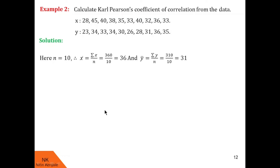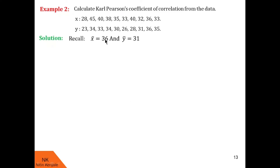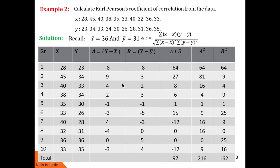For further calculations we use the calculation table with x bar equals 36 and y bar equals 31. For column A, x minus x bar: 28 minus 36 equals minus 8; 45 minus 36 equals 9; 40 minus 36 equals 4, and so on. For column B, y minus y bar: 23 minus 31 equals minus 8; 34 minus 31 equals 3; 33 minus 31 equals 2, and so on. For A into B: minus 8 into minus 8 equals 64; 9 into 3 equals 27; 4 into 2 equals 8, and so on.